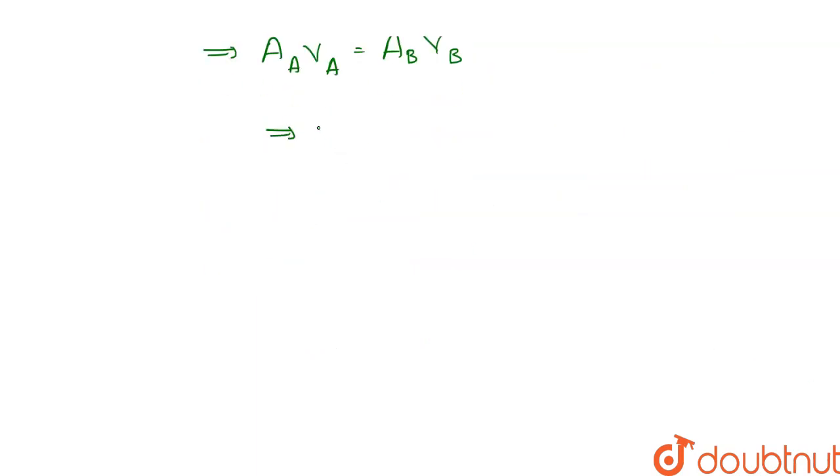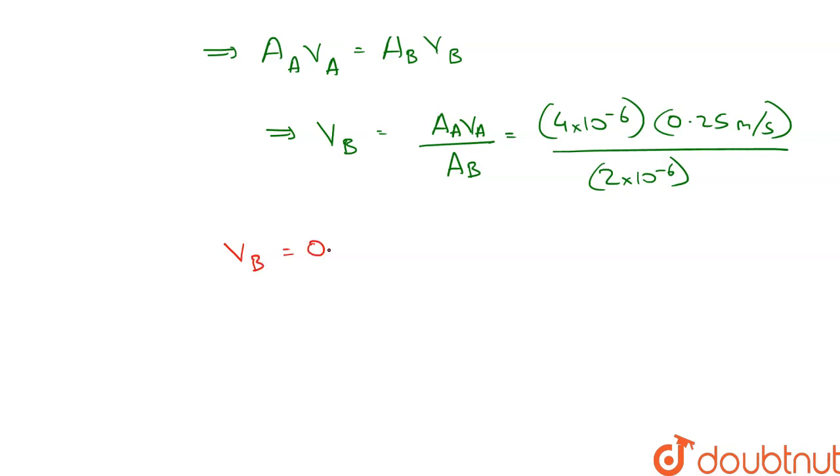After rearranging, we get VB is equal to AA VA upon AB. Inserting the values, we get 4 into 10 to the power minus 6 meter square into 0.25 meter per second. So upon calculation, we get flow of river at B equal to 0.5 meter per second. This is the answer to the B part.